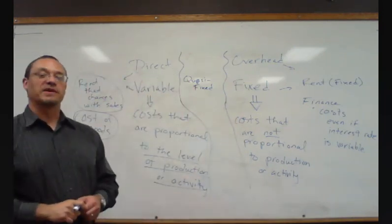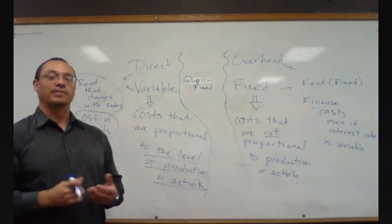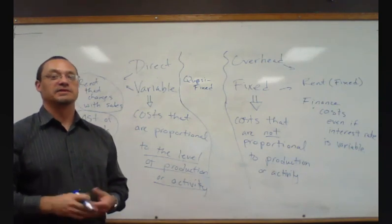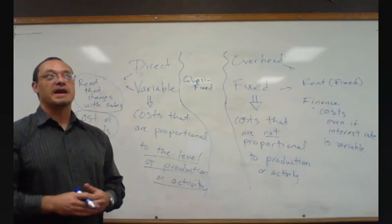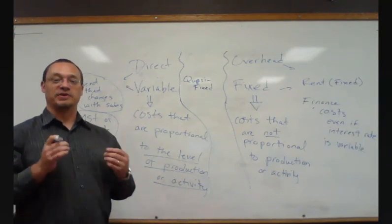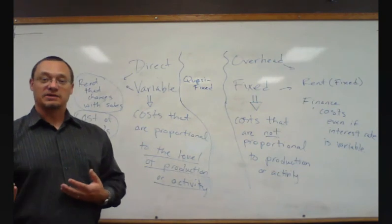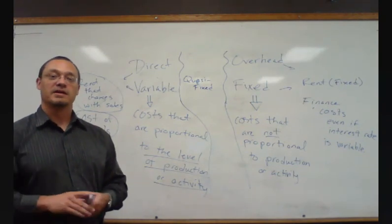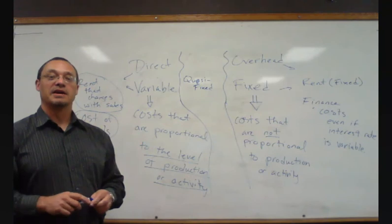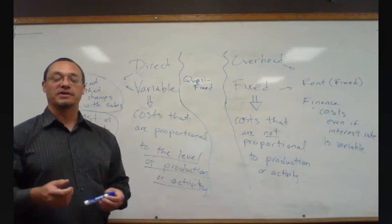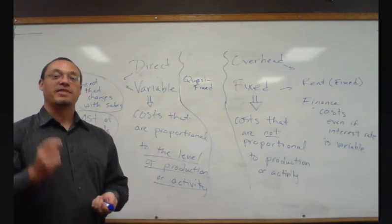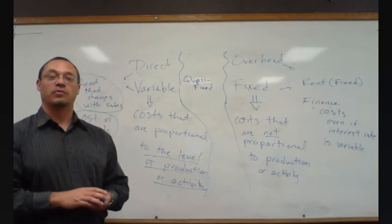A quasi-fixed cost would be something like the following. Suppose you have a telephone line, a 1-800 number. And you might pay $100 a month just to have that 1-800 number exist. But you're taking orders. People are phoning in and placing orders with your company. And let's suppose that on average, when someone phones in to place an order, that phone call costs you an additional $1.